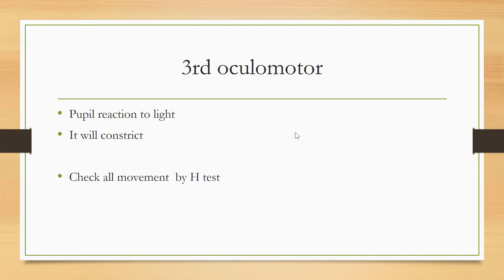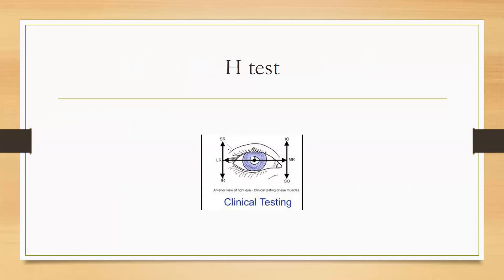Third is oculomotor. We will put the torch in the eyes of the patient and the pupil will constrict — this is the test to check the oculomotor nerve. We can also do the H-test. We draw the letter H with our fingers in the air, and the patient follows our fingers with their eyes. This tests the extraocular muscles supplied by the oculomotor nerve.